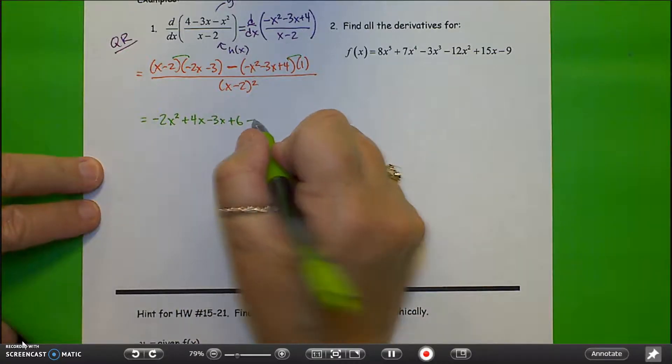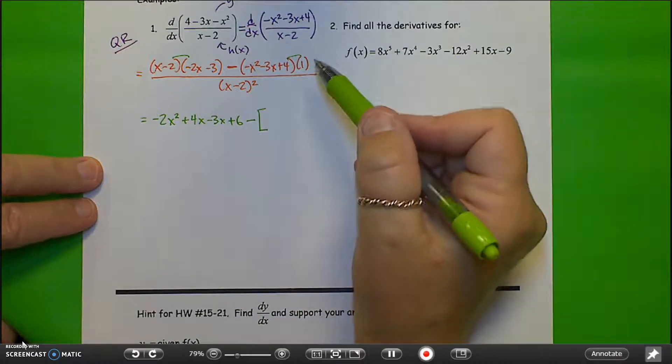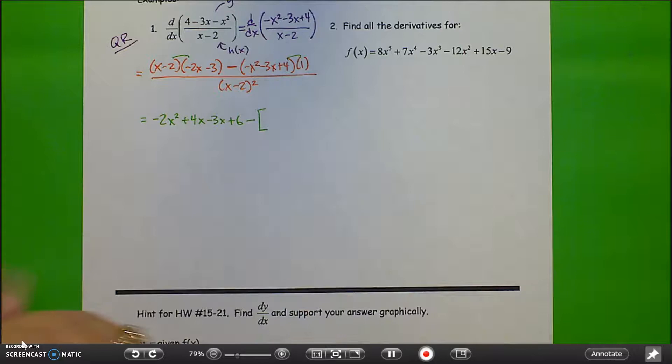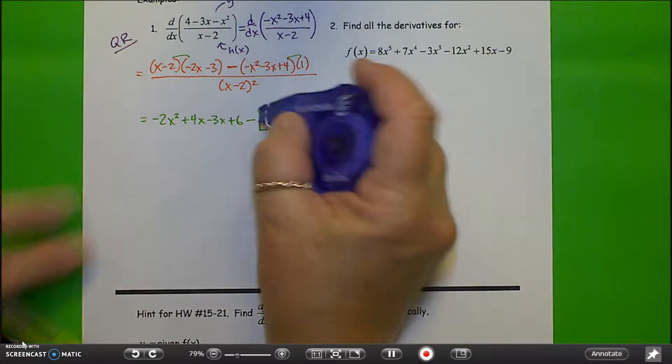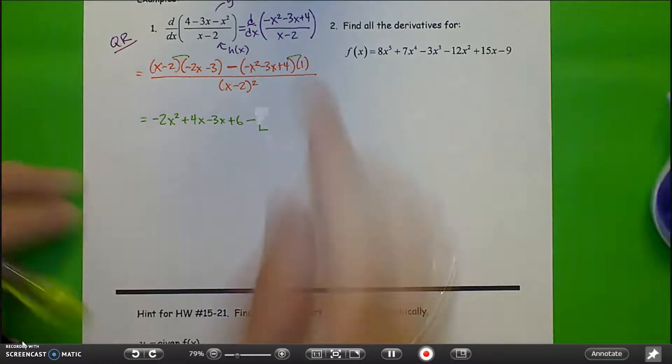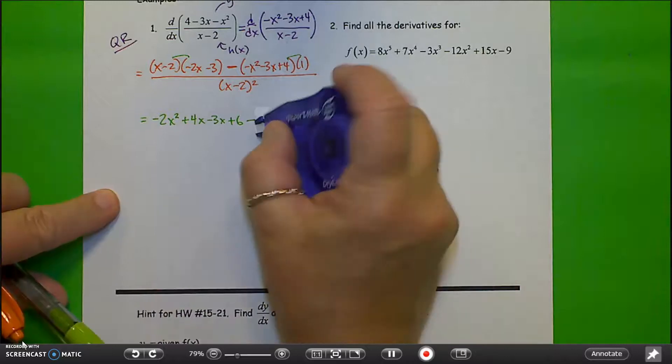And then I have minus, and actually I don't have any real multiplication that I have to do here, so I don't really need that set of parentheses. What I'm going to do is go ahead and distribute the negative sign immediately.